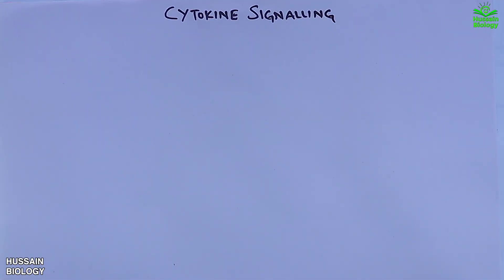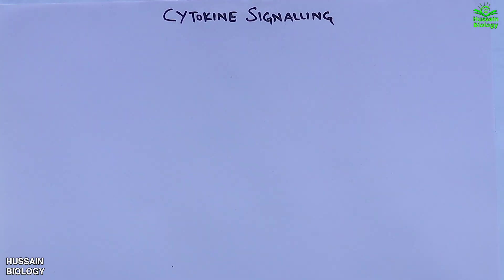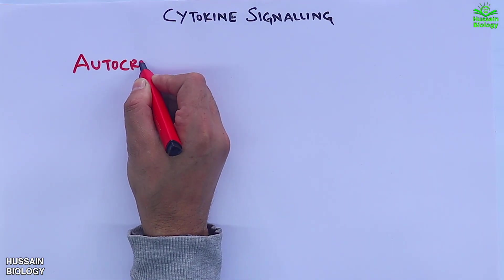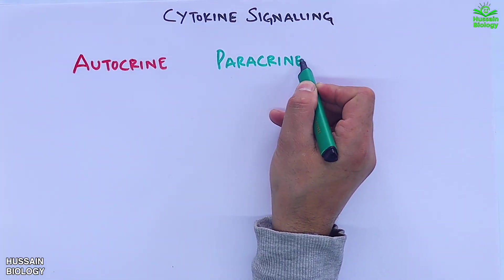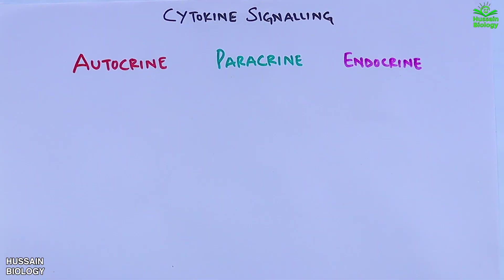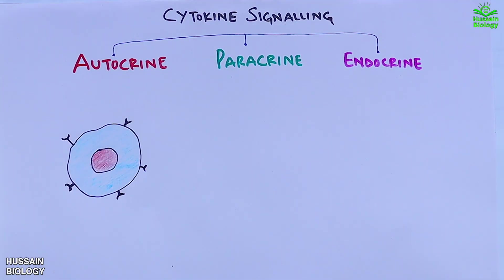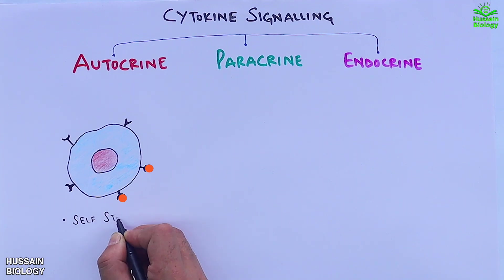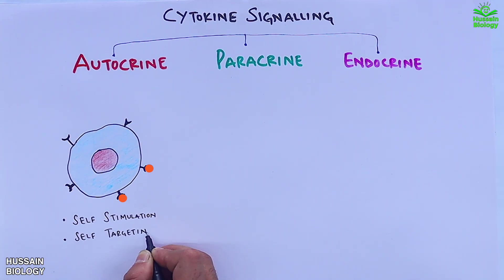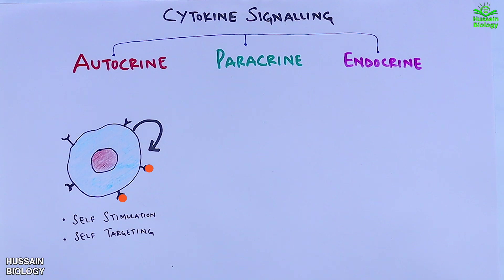There are three ways of signaling. The first is autocrine signaling, the second is paracrine signaling, and the third is endocrine. In autocrine signaling, the cell shown in the diagram — which is a T helper cell — secretes cytokines and targets its own receptors, so we can say it's a kind of self-stimulation and self-targeting. That is termed autocrine signaling.